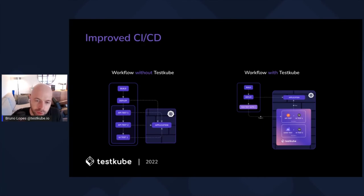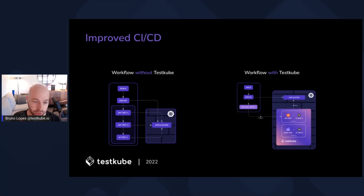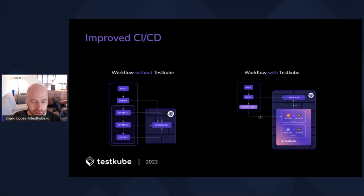Continuing on the topic of improved CI/CD: on the left side you can see a diagram showing steps in a pipeline — build, deploy, and then integration tests like API test one, API test two, and a UI test. As you add more tools or tests or different flows, you need to change the CI/CD and add more steps. The tests and CI/CD are coupled, so the complexity of your tests makes CI/CD complexity grow. On the right, with TestQube, that complexity gets removed — testing is not a big part of your CI/CD, and all your tests live in the cluster with TestQube.